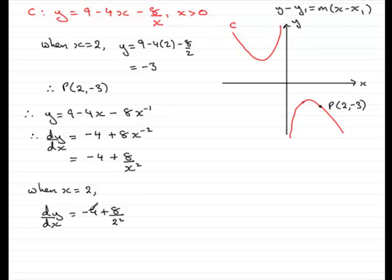So we have 8 divided by 4 essentially here, which is 2. Minus 4 add 2 is minus 2. So the gradient at P is minus 2, our m value.